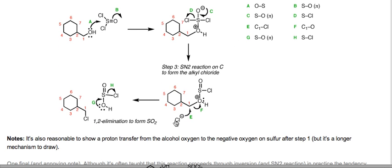The last step: the chloride ion we just displaced (breaking the sulfur-chlorine bond in arrow D) comes back and attacks carbon-1 to form a carbon-chlorine bond, displacing the carbon-oxygen bond. This is an SN2 substitution. We've now formed our alkyl chloride. The oxygen-sulfur bond then fragments as a lone pair from oxygen displaces chlorine, ultimately giving us sulfur dioxide gas and HCl. The reaction is completely irreversible because SO2 bubbles off and removes the reactants from solution.